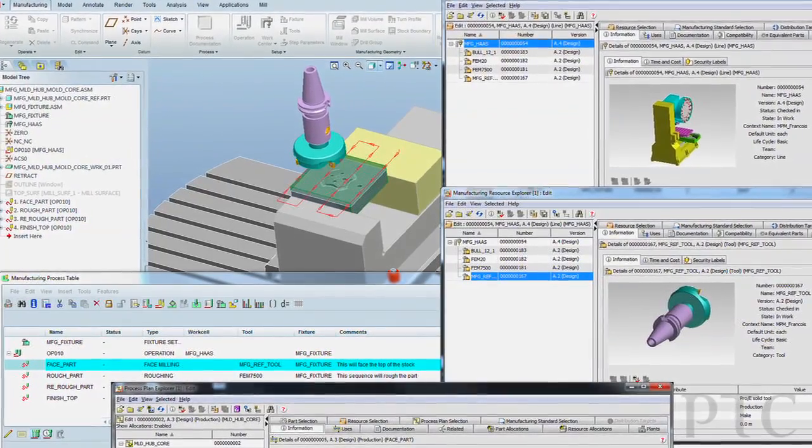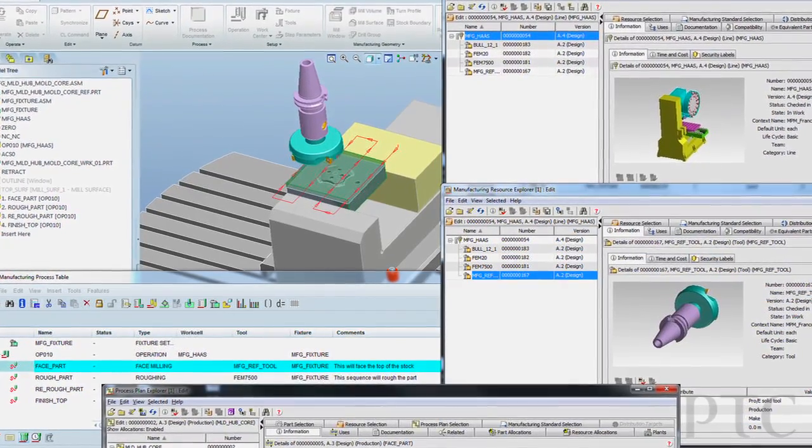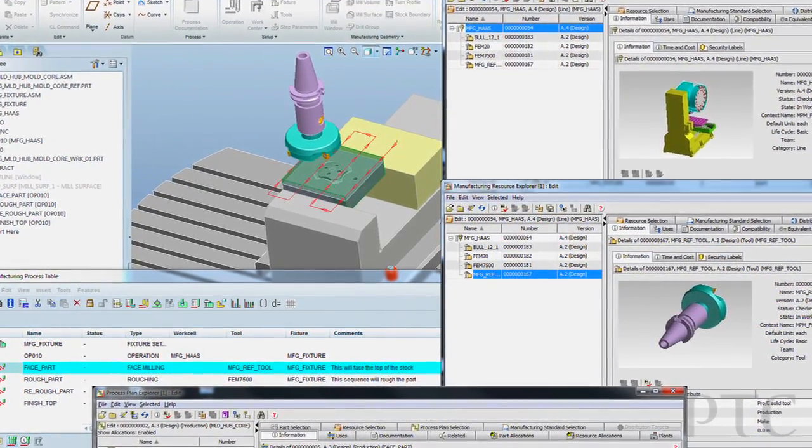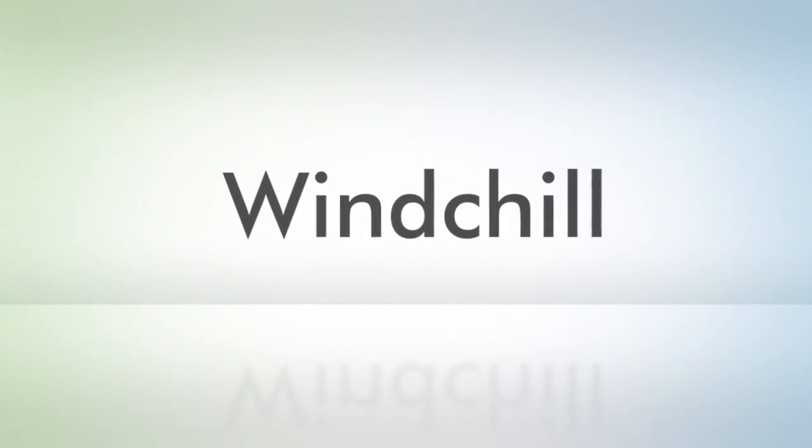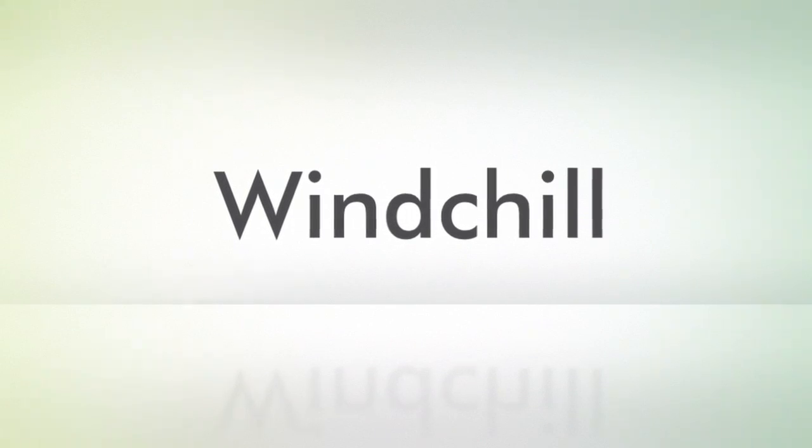These are just some of the great new capabilities in Windchill MPM Link that can help manufacturing engineers digitally develop and manage all of their process plan deliverables concurrently with design. This will help increase quality, reduce rework issues, and improve overall efficiency. I invite you to learn more about Windchill MPM Link by visiting the product pages on ptc.com. Thank you.